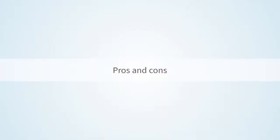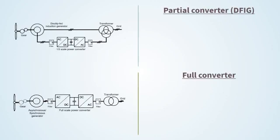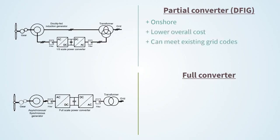Let's now focus on the pros and cons of both converter topologies. On the one hand, the doubly fed induction generator is mainly used on onshore wind turbines. The overall wind turbine cost is lower and can meet existing grid codes. However, maintenance is more expensive and turbine power levels are limited to a maximum of six megawatt at present.